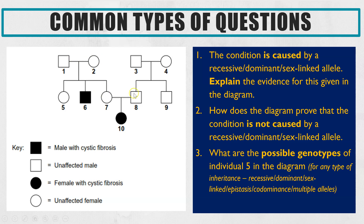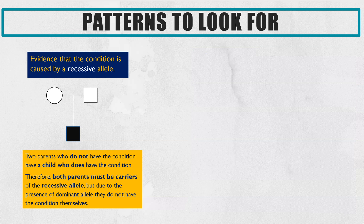I have got a video that goes through that in a lot more detail for epistasis, so I'll link that up there if you want to check out exactly how to do that part on pedigree diagrams for epistasis. But let's have a look at some common patterns to really help you speed up and understand these application style questions.